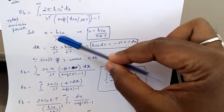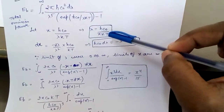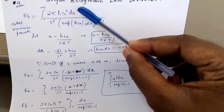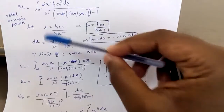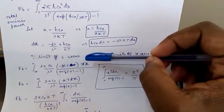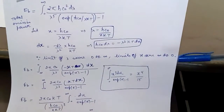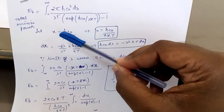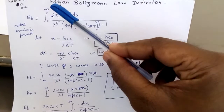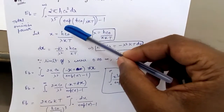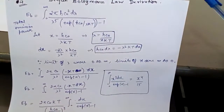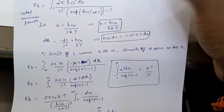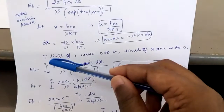So dx = −dλ/(λ² · hc₀/kT), and from here λ = hc₀/(xkT). Now since the limit of λ was 0 to infinity, the limit of x will be infinity to 0. By putting λ = 0 you get x = infinity, and by putting λ = infinity you get x = 0. So the limits get changed from infinity to 0.